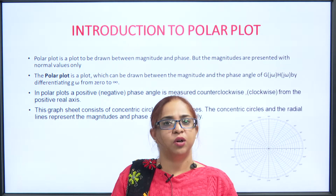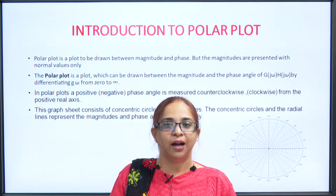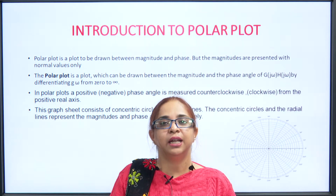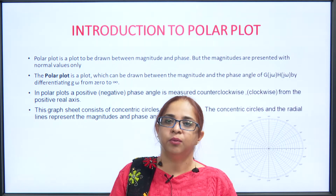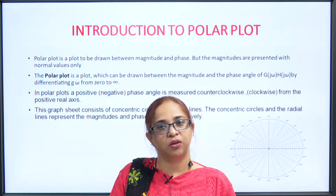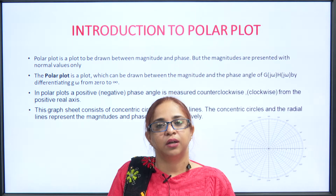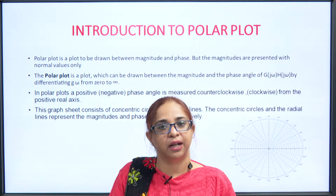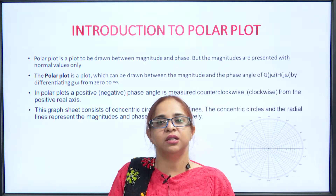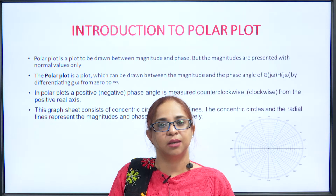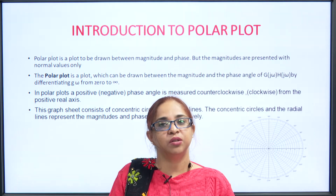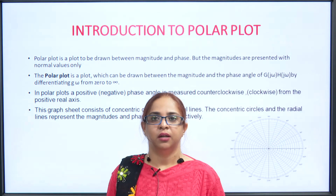The second was phase margin. Phase margin is 180 degrees plus the phase angle at a frequency called the gain crossover frequency. Gain crossover frequency is when the magnitude becomes equal to 1. When magnitude is equal to 1, that frequency is called the gain crossover frequency. We add that angle with 180 and the value is called the phase margin. Whenever these two values become positive, then and only then the system becomes stable. If either of them is negative, the system becomes unstable. If the phase angle becomes 0, the system is called marginally stable.